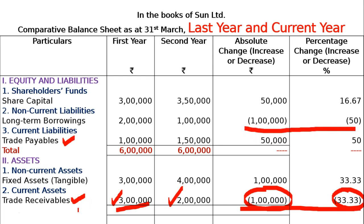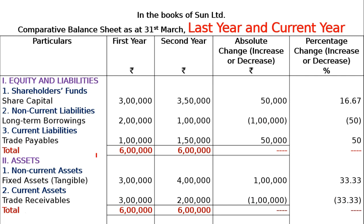Now calculate the total for the asset side. The total is already given in the question and should always match. First year total Rs. 6 lakhs, second year total Rs. 6 lakhs — so 6 lakh minus 6 lakh = 0, and percentage change is also 0. This completes your answer for the Comparative Balance Sheet.